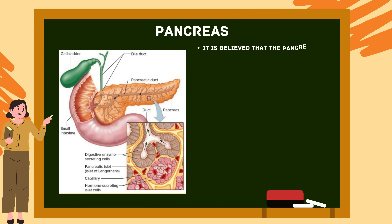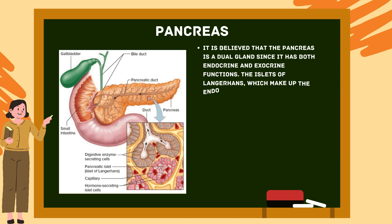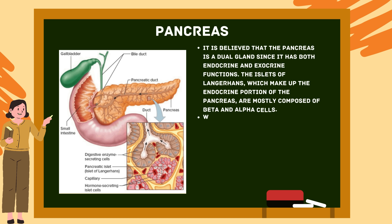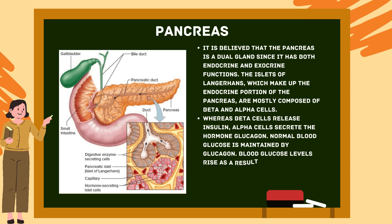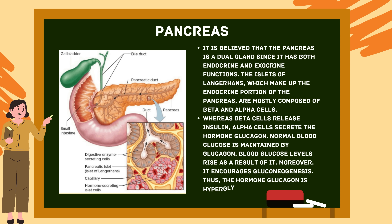Pancreas: The pancreas is considered a dual gland since it has both endocrine and exocrine functions. The islets of Langerhans, which make up the endocrine portion of the pancreas, are mostly composed of beta and alpha cells. Beta cells release insulin; alpha cells secrete glucagon. Normal blood glucose is maintained by glucagon, which raises blood glucose levels and encourages gluconeogenesis. Thus, the hormone glucagon is hyperglycemic.